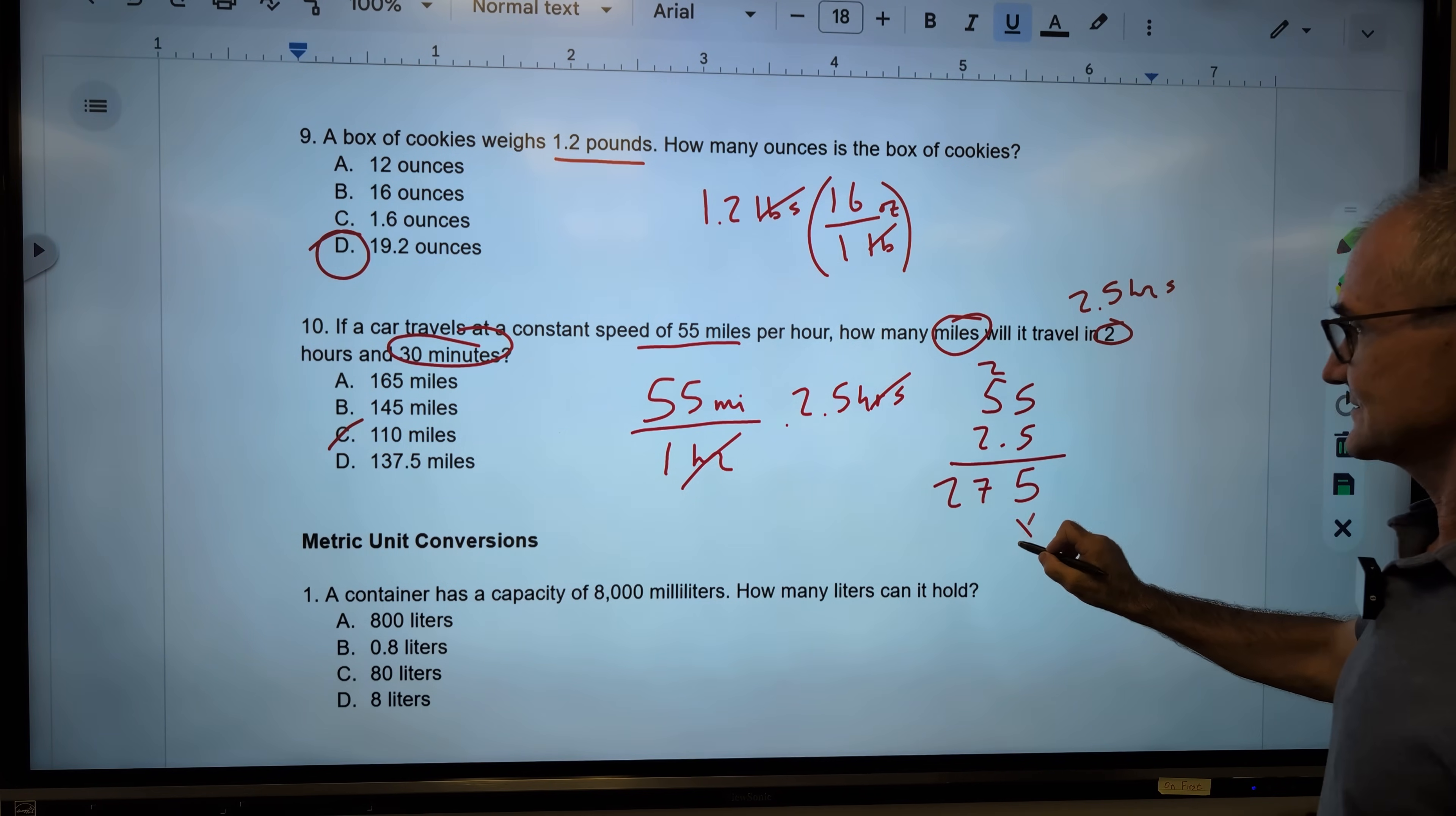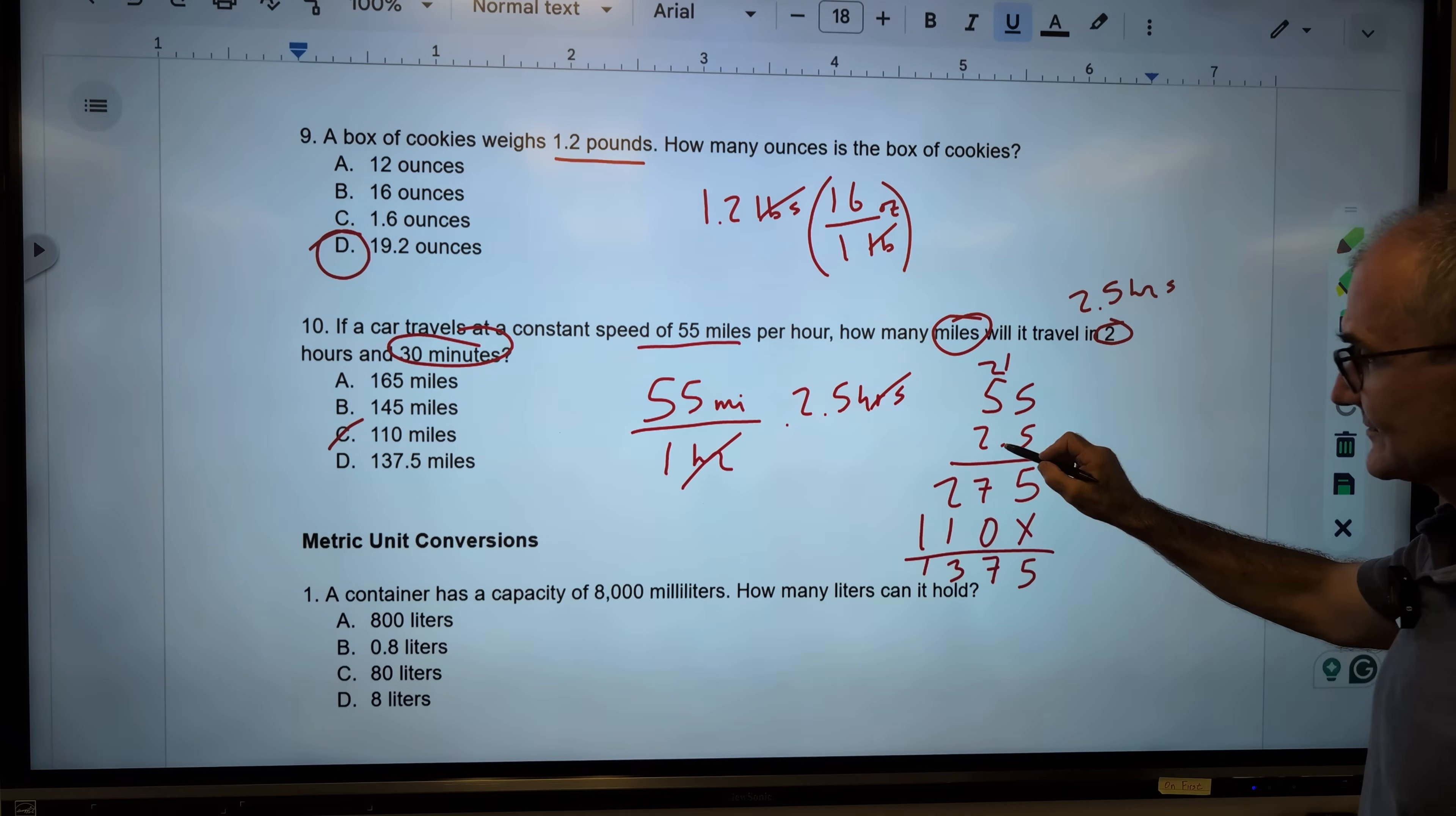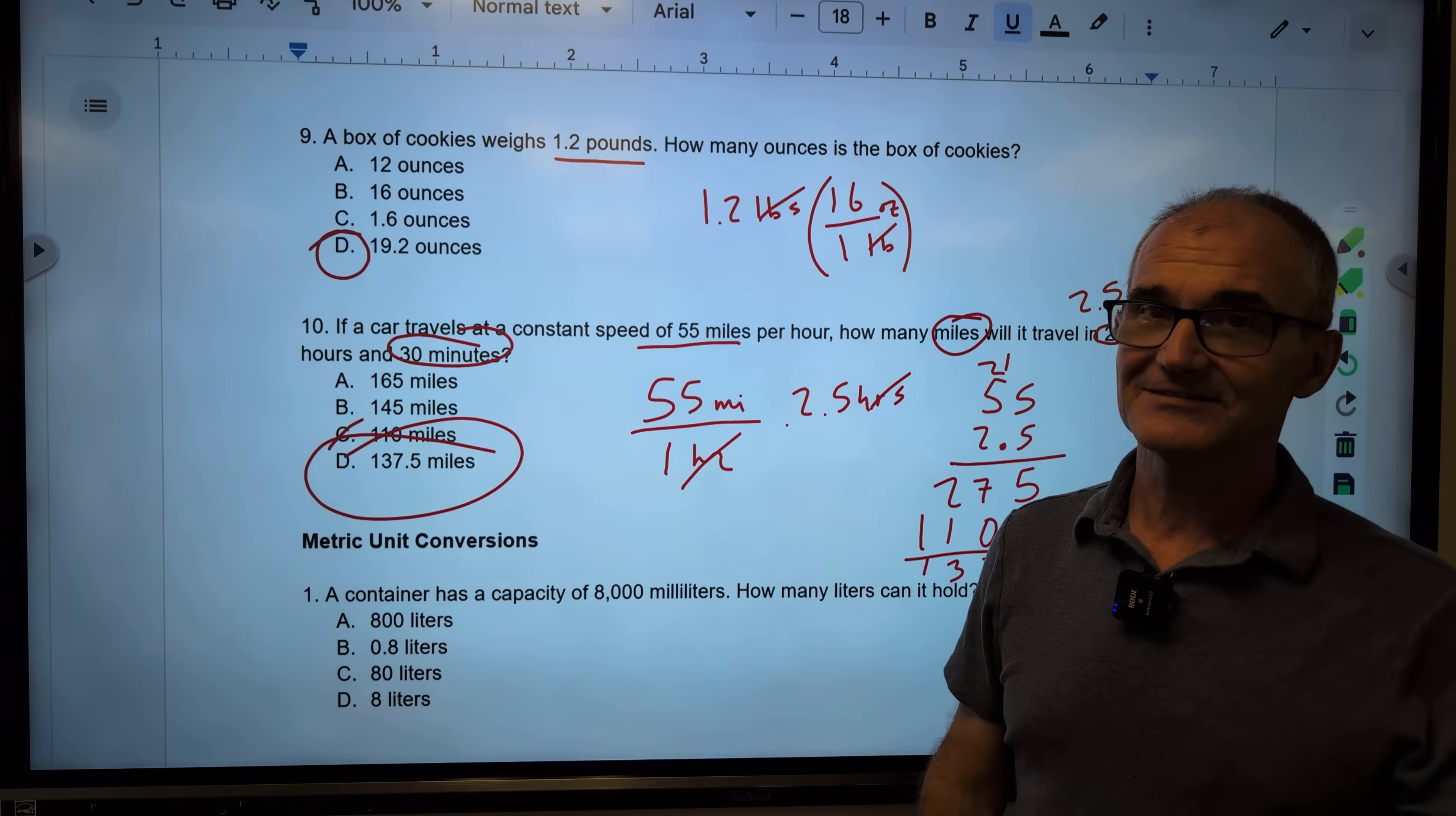So I'm going to go 55 times 2.5. 25, carry the 2. 27, placeholder. 10, carry the 1. 11, 5, 7, 3, 1. Decimal place is over 1. Decimal place goes over 1. The correct answer, answer D, 137.5. Again, I know these are tricky.